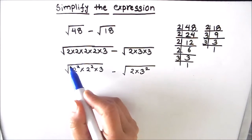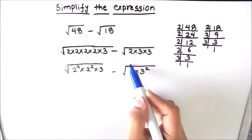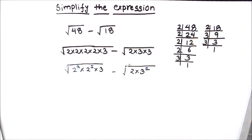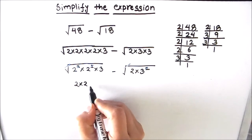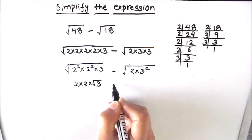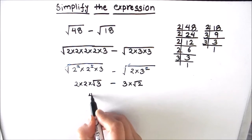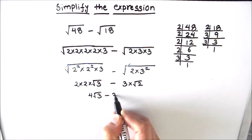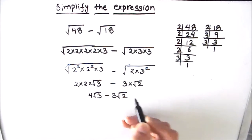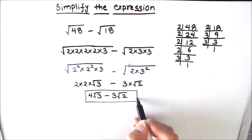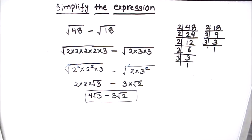So we have 2×2×√3 minus 3×√2, which gives us 4√3 minus 3√2. This is our final answer — that is how we simplify these types of expressions. I hope this video is helpful. If you like the video, please hit the like button and subscribe to my channel for more math videos. Thanks for watching!